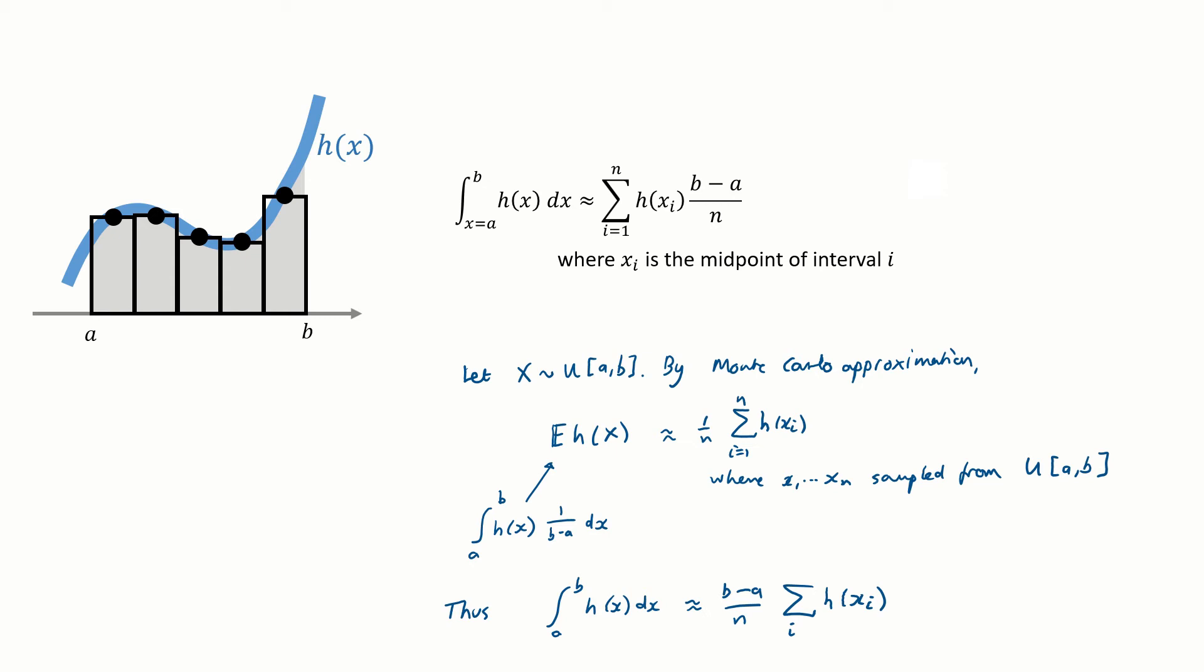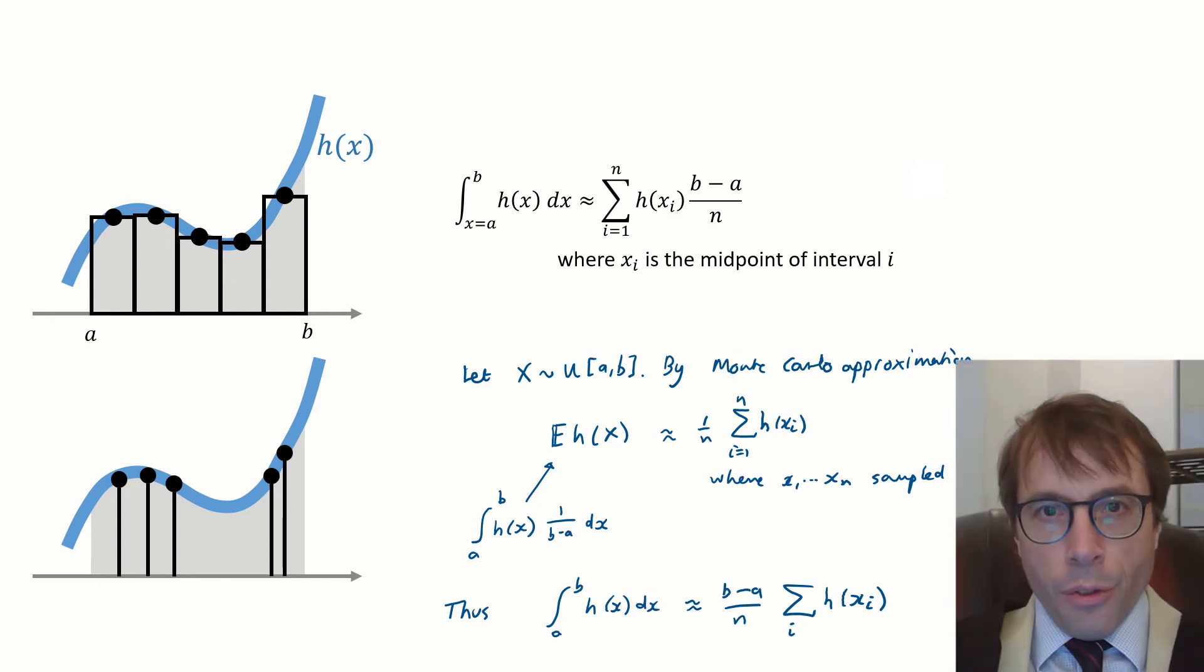So if we just rearrange our Monte Carlo approximation, multiplying each side by b minus a, we get back to something very similar to the classic split into rectangles formula. The only difference is that the classic formula insists on picking the xᵢ evenly spaced across the interval, whereas our Monte Carlo version says we can just pick the xᵢ randomly wherever we like, as long as it's uniform over the range. This bottom version is called Monte Carlo integration.